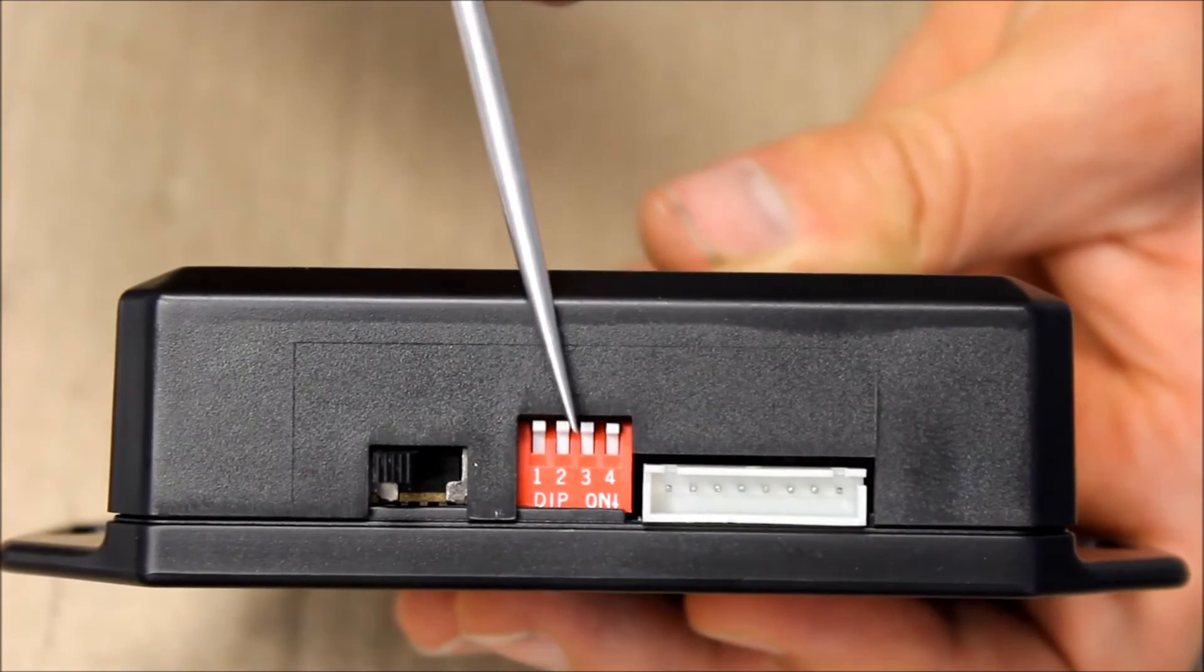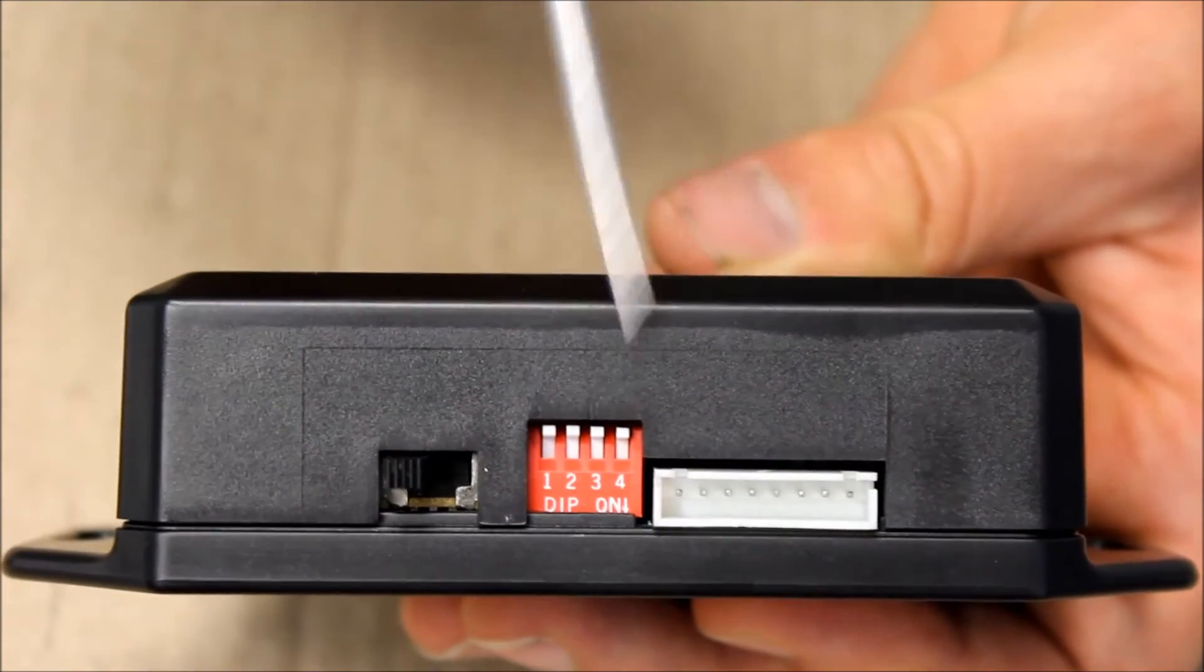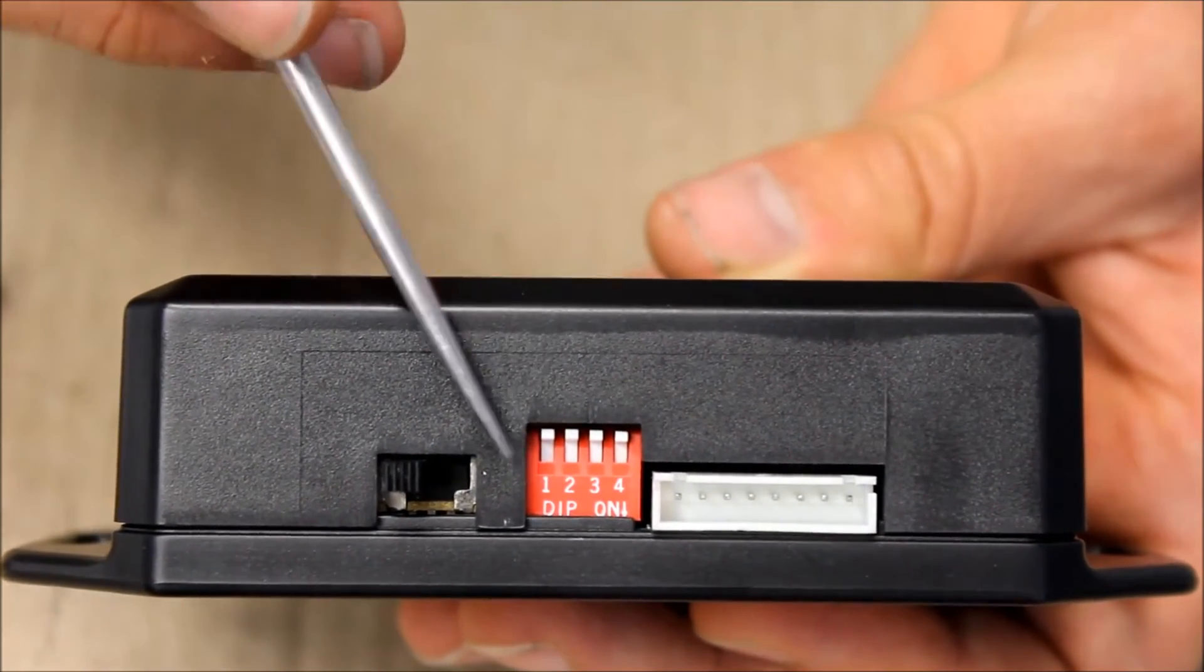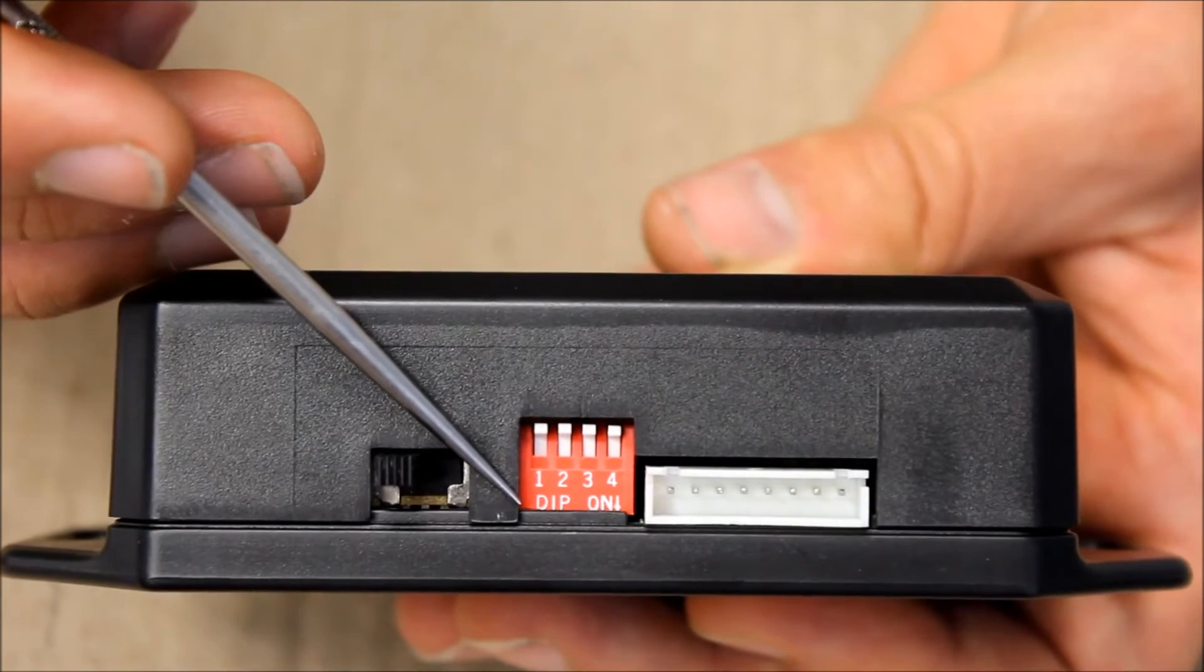These red switches are used for the more advanced settings. See page 9 of the user manual. There's a link in the description down below. These switches all start in the off position. Switching them down turns them on.